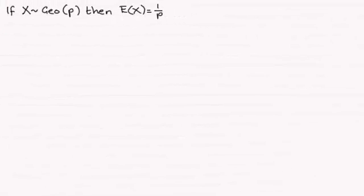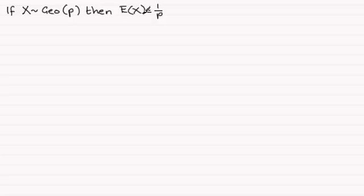In this video, I want to show you that if X follows a geometric distribution with parameter P, then the expected value of X — the mean, E(X) — is equal to 1 divided by P. So how do we go about proving this?